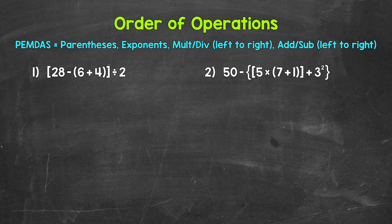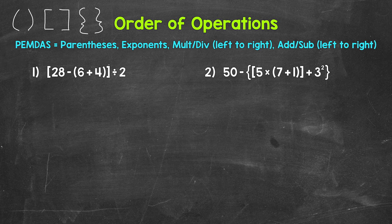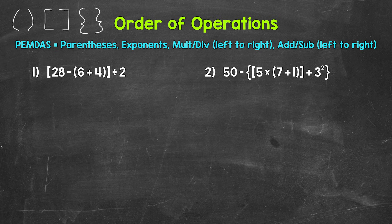Taking a look at parentheses, brackets, and braces — all of these are grouping symbols and take priority within the order of operations. They come first. You can think of brackets and braces just like parentheses; they are grouping symbols just like parentheses. Let's take a look at our examples and see how to work through problems involving multiple grouping symbols. You may hear this called nested parentheses — parentheses inside of other grouping symbols, so grouping symbols inside of grouping symbols.